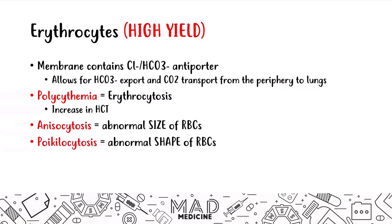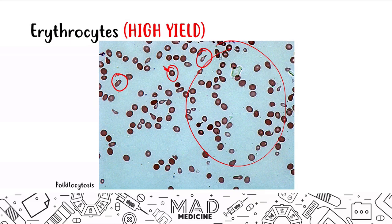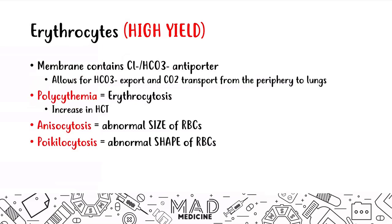The next thing you need to know is poikilocytosis, which means you have abnormal shapes of red blood cells. In anisocytosis you have different sizes; in poikilocytosis you have different shapes. As you can see in this image, you have a normal red blood cell, but then you have these weird, wonky shapes — more elliptical shaped red blood cells. These are not consistent with the normal red blood cell shape, which should look like a circle with a central pallor in the middle. That should clue you into poikilocytosis — different shapes of red blood cells.